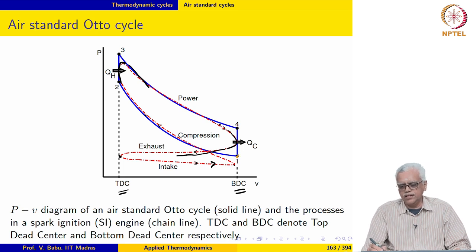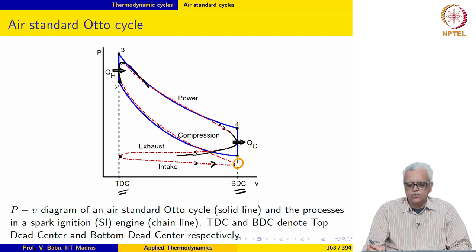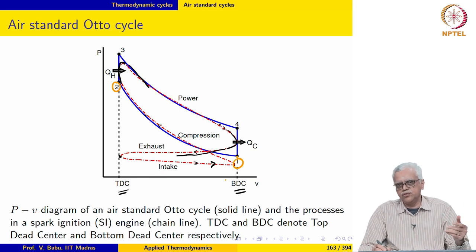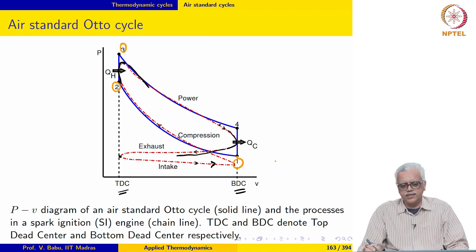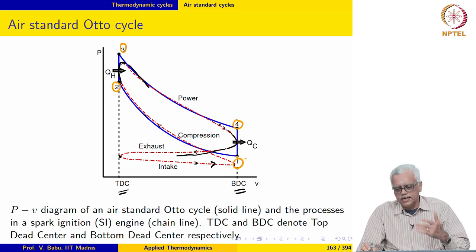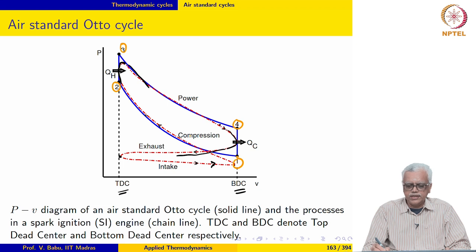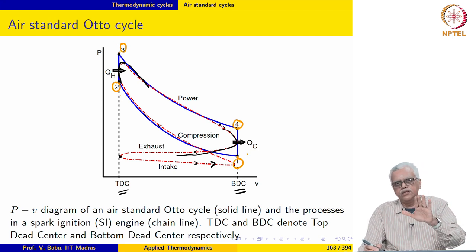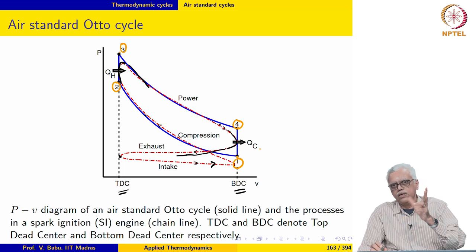The air starts the cyclic process from state 1, is compressed isentropically from state 1 to state 2, heat addition occurs at constant volume between states 2 and 3, the power stroke or expansion occurs between states 3 and 4, and heat rejection at constant volume takes place between states 4 and 1. In going from state 1 to 2 the piston moves from BDC to TDC, and from state 3 to 4 it moves from TDC to BDC — so there are only two strokes.